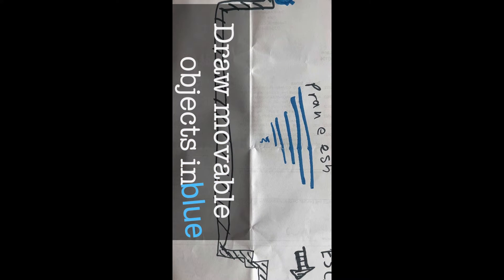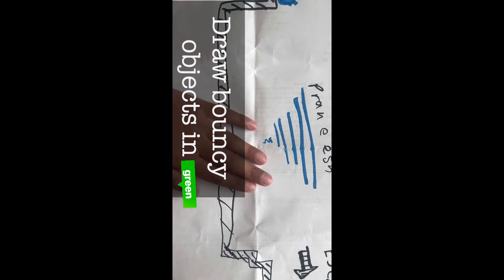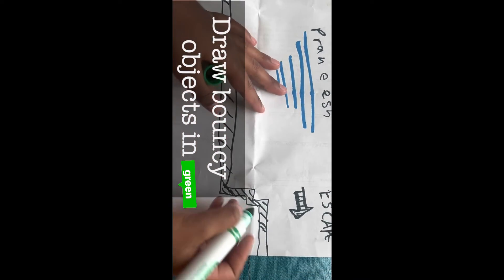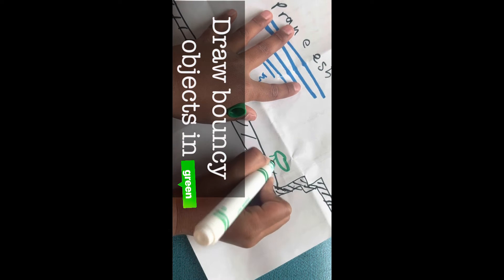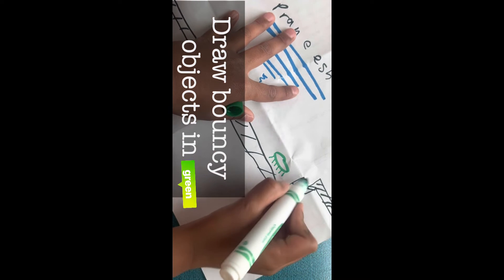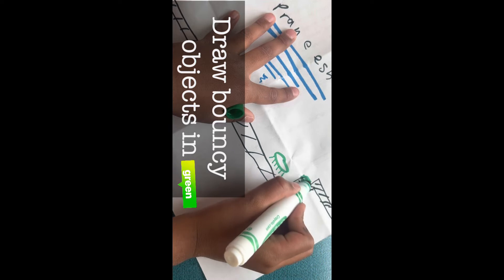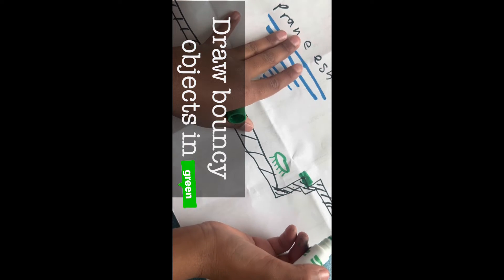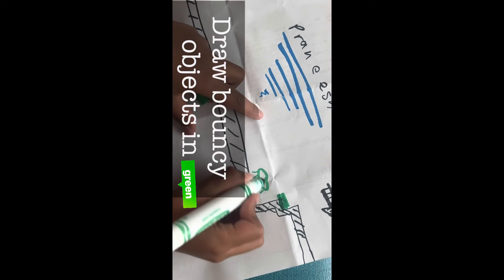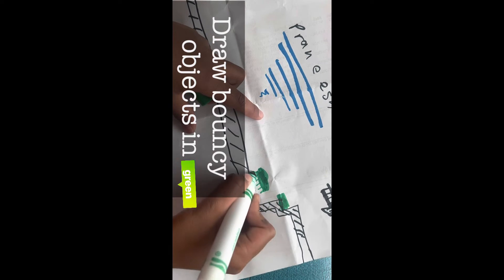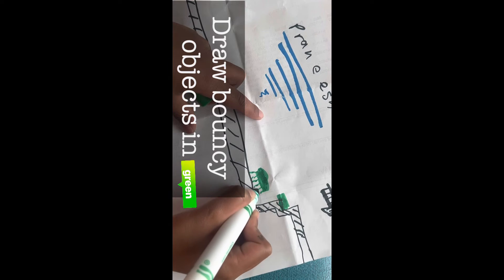And then, by the way, now this is what you need to do. You draw bouncy objects in green. So I'm going to put a bouncy object like, maybe you could do like a trampoline, or you could just do lines. Maybe you could just fill this up like that and then make it touch the ground.